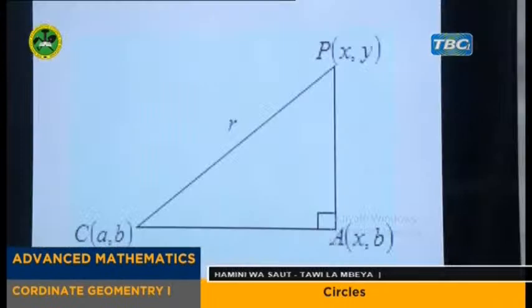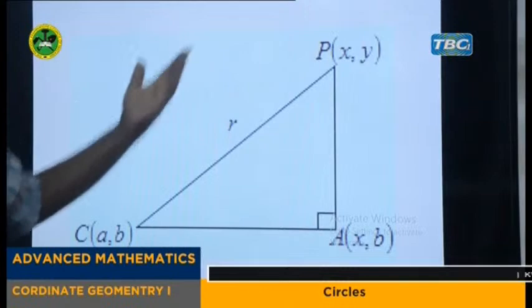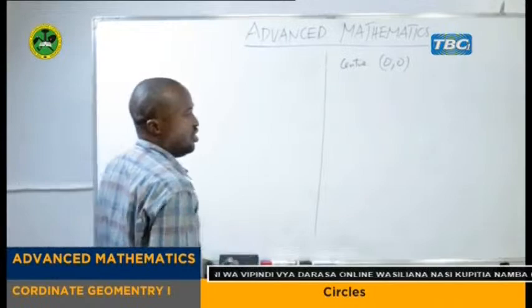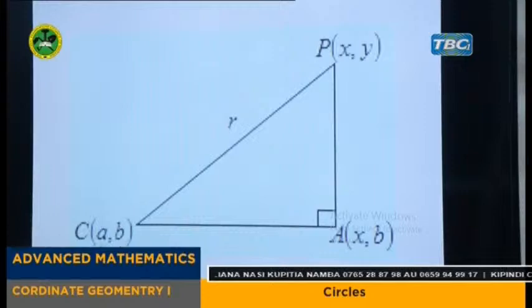So here we are going to consider this triangle, the triangle CPA. So in our triangle we have the length CP which is equal to R. So CP is equal to R, or radius.